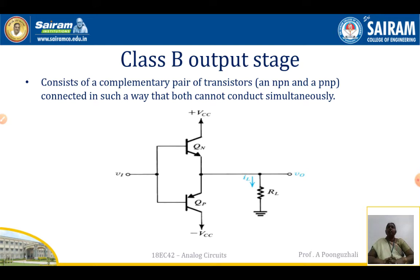In a Class B amplifier, the Q point is located on the cutoff region. When I plot the characteristic curve IC versus VCE, I plot the DC load line and the Q point is chosen at the cutoff point. When chosen at the cutoff point, the transistor is going to conduct for only one half of the cycle — that means conduction is for 180 degrees only, so I get only one half of the output waveform.